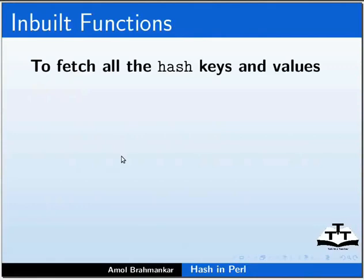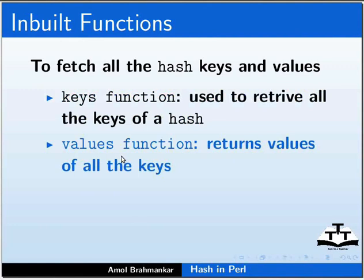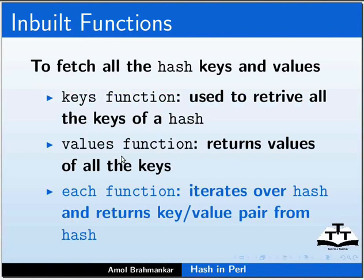Now let us see how to get all keys and values of a hash. Perl provides inbuilt functions to fetch all the hash keys and values. The keys function is used to retrieve all the keys of a hash. The values function returns values of all the keys, whereas the each function iterates over the hash and returns a key-value pair from the hash. Let us understand this using a sample program.